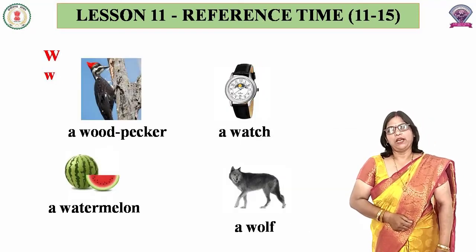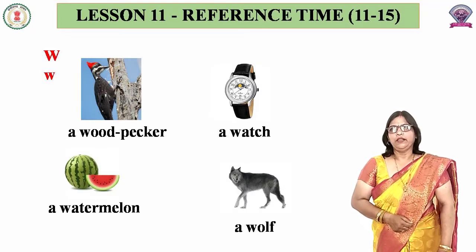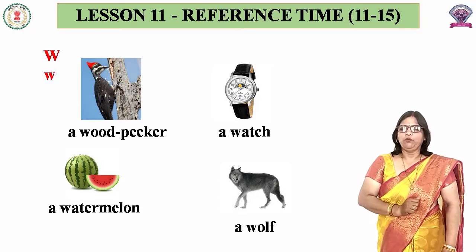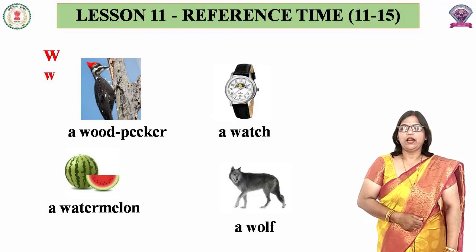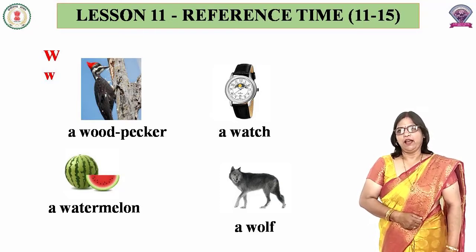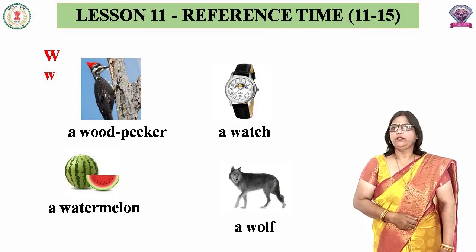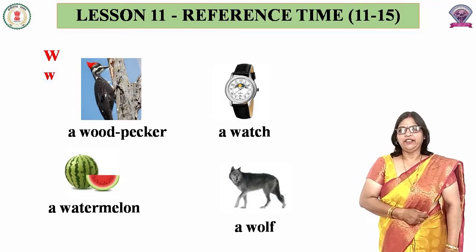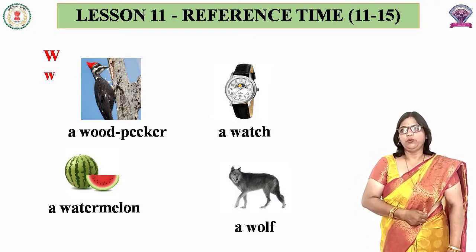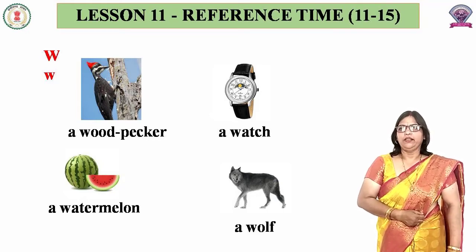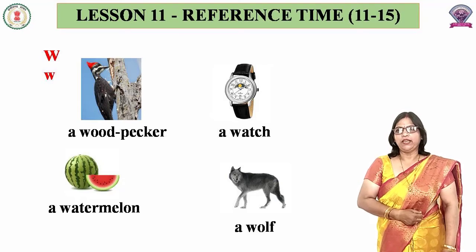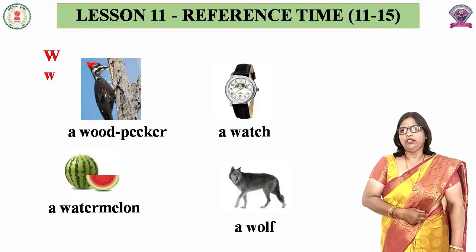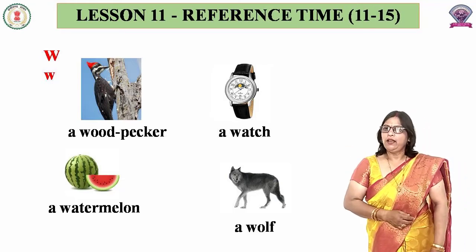Next letter W. Woodpecker. Woodpecker. Watermelon. उसके बाद क्या दिखाई दे रहा है? कुट्ते जैसा कुछ दिखाई दे रहा है? यह कुट्ता नहीं है — इसको बोलते हैं Wolf.